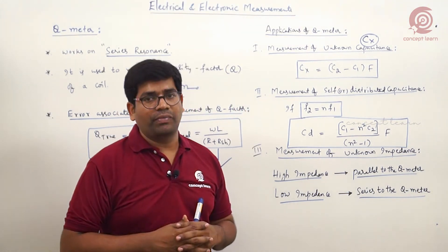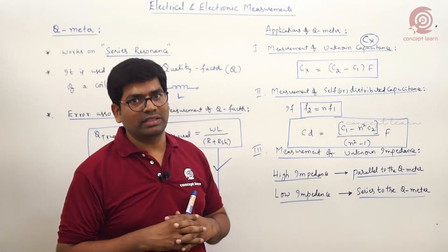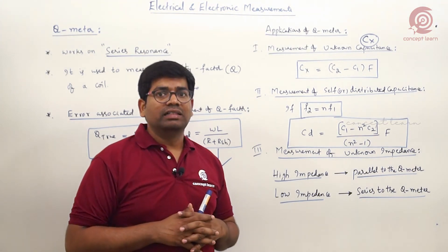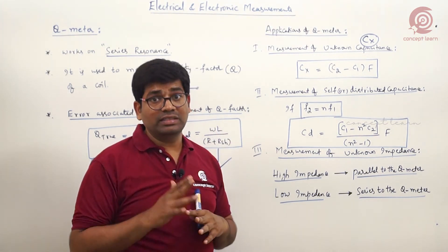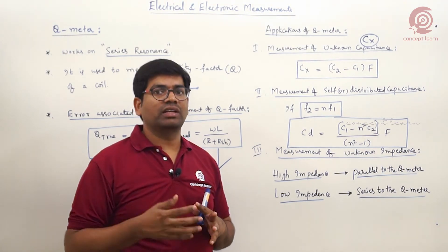How do we connect? If it is high impedance, high impedance is always connected in parallel to the Q meter. Low impedance is always connected in series with the Q meter. This is a most important point, even for objective type questions, especially for engineering services.